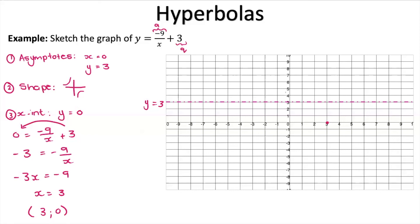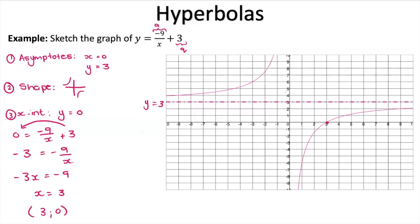All that's left is drawing the graph. You're welcome to plug in a couple of x values to find corresponding y values, but it's not necessary. As a marker, we're looking at: do you know your asymptotes, have you found the correct x-intercept, and are you drawing the graph in the correct quadrants? We said top left and bottom right — and there it is. That's all there is to hyperbolas for now. In our next lesson we'll work out how to find their equations, but for now let's get comfortable with drawing them. Good luck.